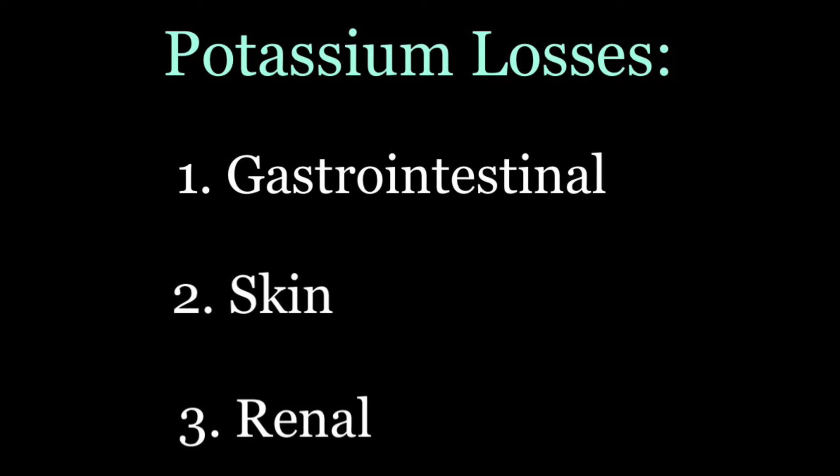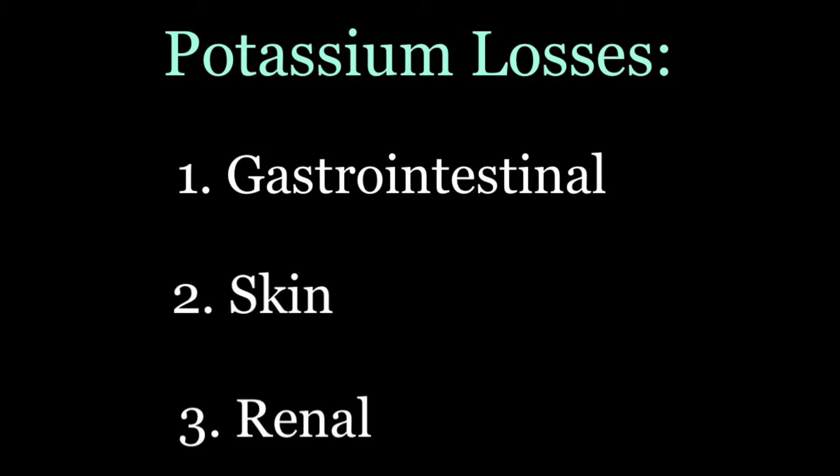Potassium losses can be grouped into GI losses, skin losses, and renal losses. The gastrointestinal tract houses a lot of potassium, so any loss of gastric fluids will cause a loss of potassium. In practice, this includes vomiting, diarrhea, and nasogastric suctioning. Anytime you have a patient with an NG tube on intermittent suctioning, monitor their potassium levels. Don't be surprised if a patient comes in for nausea and vomiting and has a low potassium level.